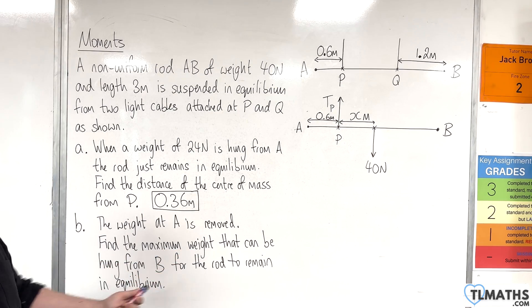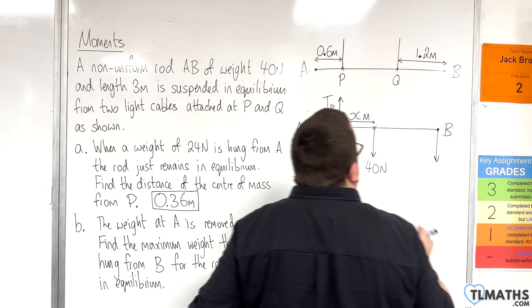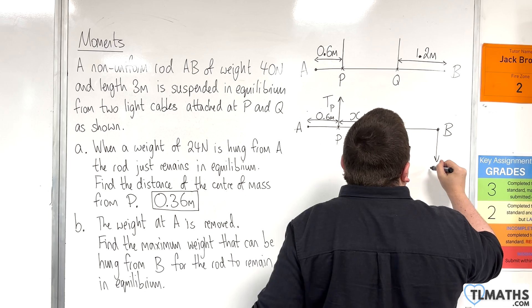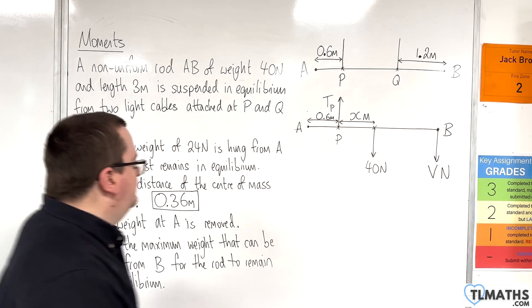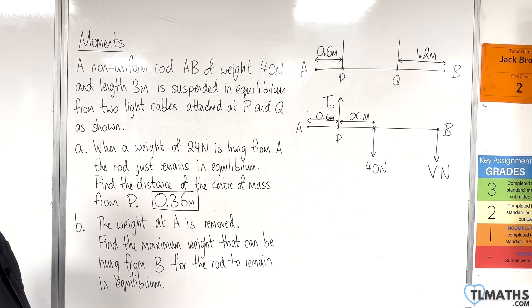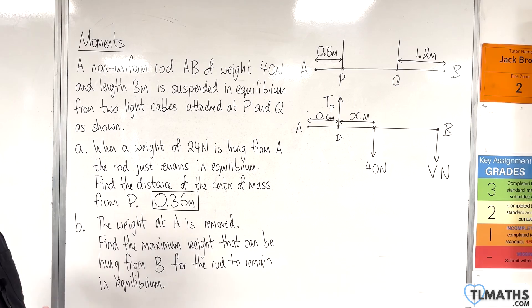We're now going to hang a weight from B. Now we don't know what that weight is. We need to work it out. So let's call that V newtons. Now, if it's going to be, we're trying to work out how large that weight can be,